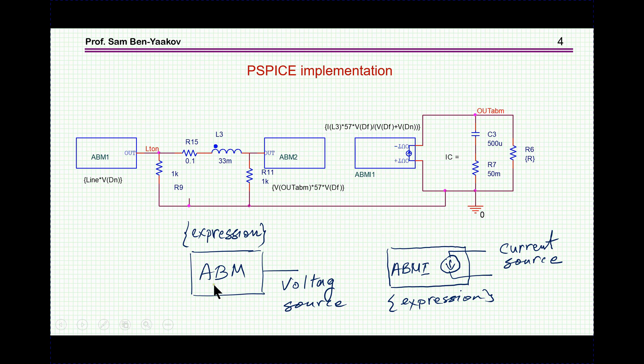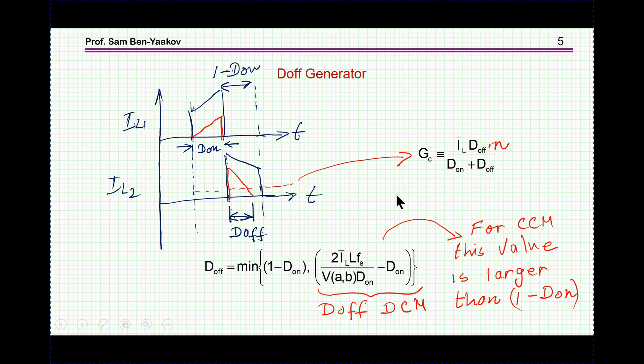I've added two resistors, and they have nothing to do with the model, this is just in case I disconnect this, so it will not be open. So we have now this ABMI, this is the current source, the value of which now is IL, average current of the inductor, times 57 turns ratio, and VDOFF. There's another term here, which I'll talk about in a minute, this is a correction for DCM. So this is the basic structure of the, in this case, flyback, but very similarly, you can do it for any PWM converter.